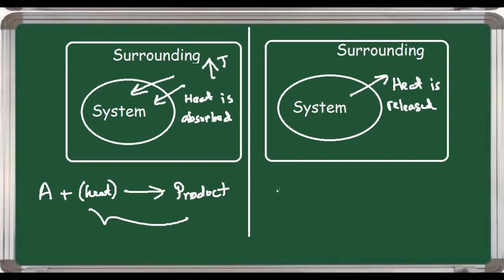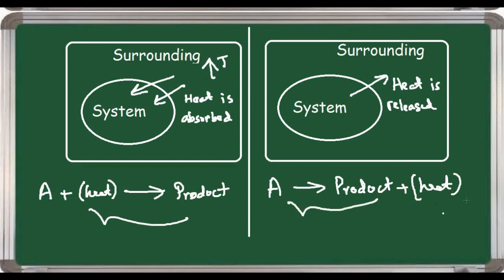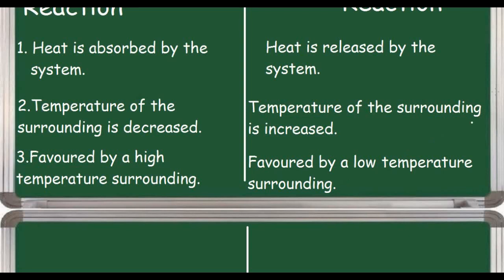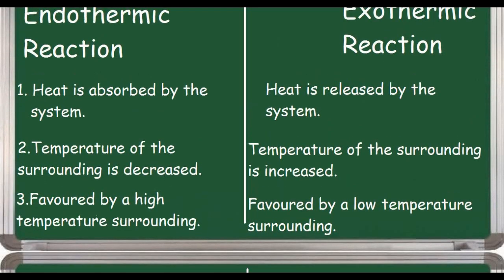For the exothermic reaction, the equation can be written as: A → product + heat, because heat is released. The more heat released, the more favorable the reaction. If I decrease the surrounding temperature, the heat release from system to surrounding becomes easier. So exothermic reactions are favored by a low temperature surrounding, and endothermic reactions are favored by a high temperature surrounding.